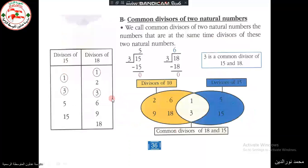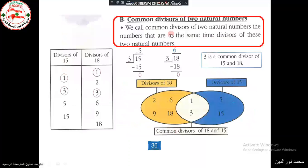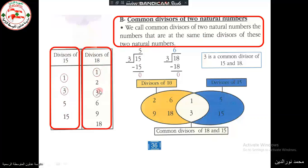Common divisors of two natural numbers: we call common divisors of two natural numbers the numbers that are at the same time divisors of these two natural numbers. The divisors of 15 are 1, 3, 5, and 15. The divisors of 18 are 1, 2, 3, 6, 9, and 18.